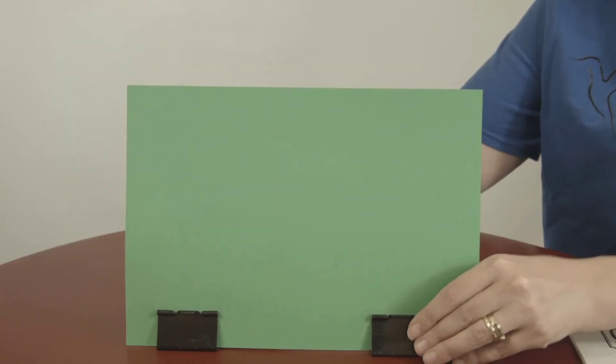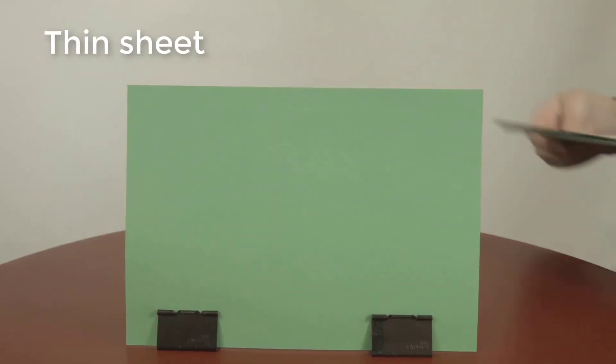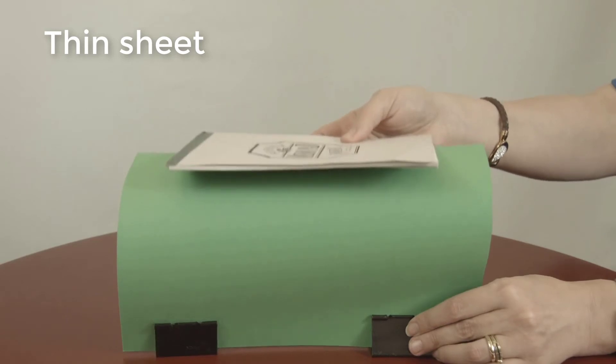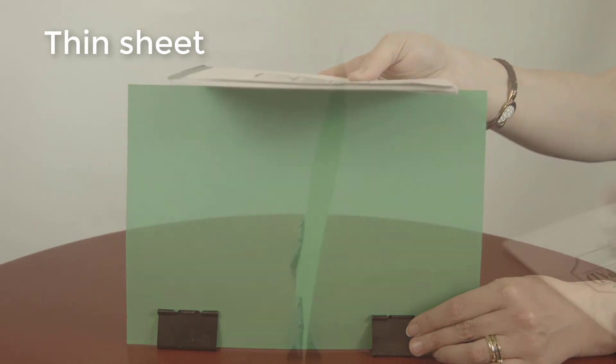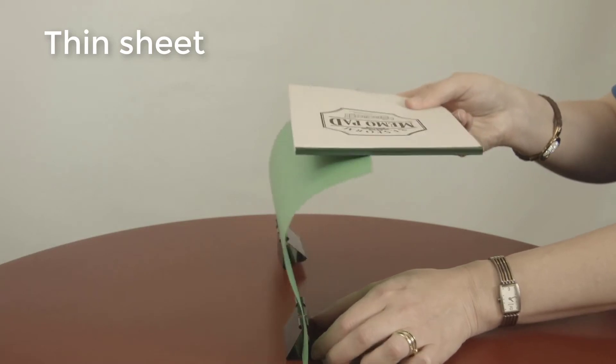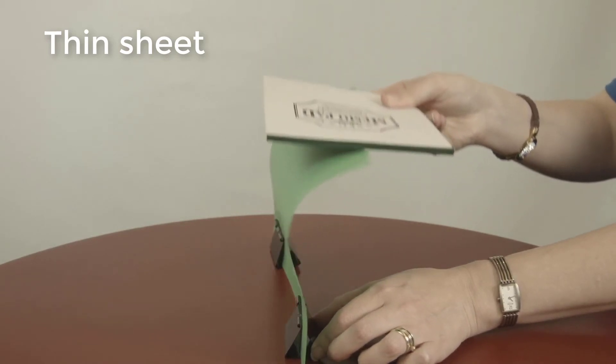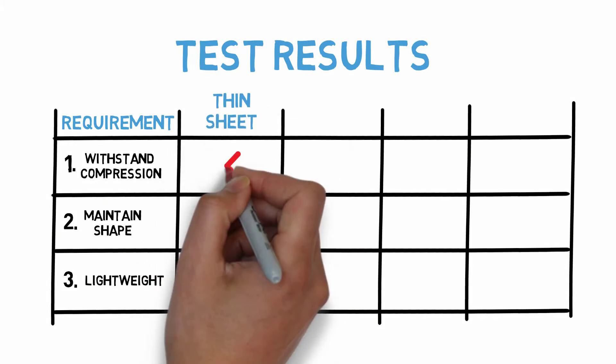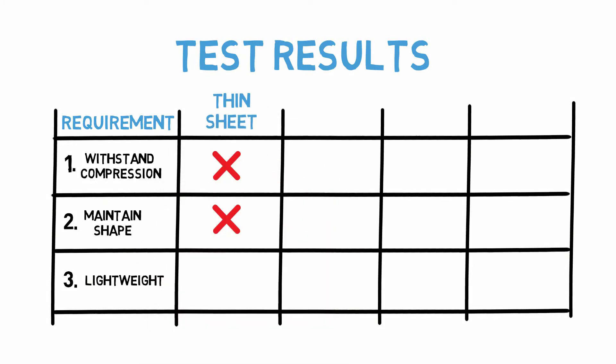To start off, let's see what happens when we take a thin piece of cardstock and try to load it. Hmm, bit difficult, isn't it? It doesn't look like it can withstand the compression load, and even under a lighter load it seems like it would bend out of shape quite easily. So unfortunately, our cardstock doesn't meet our first two design requirements. It is, however, a lightweight solution, but that doesn't outweigh the other two.